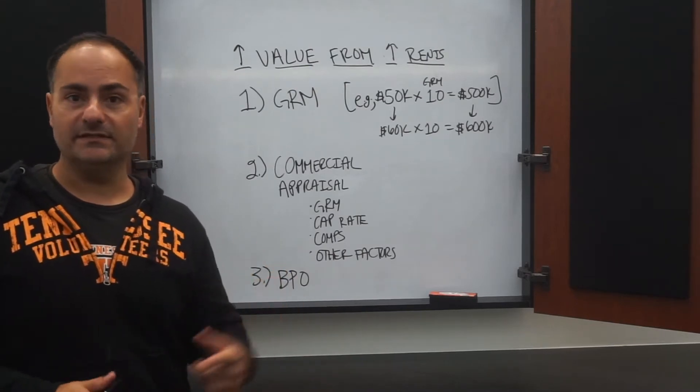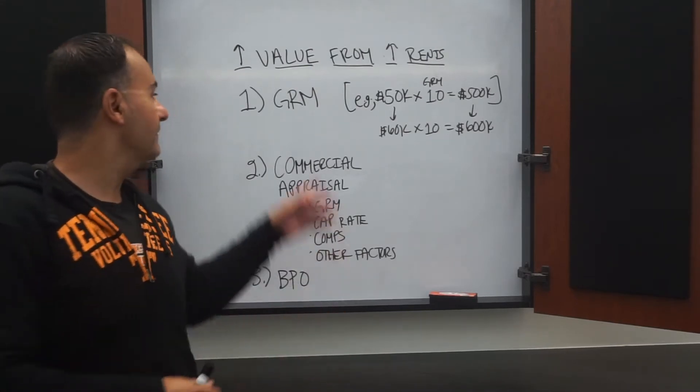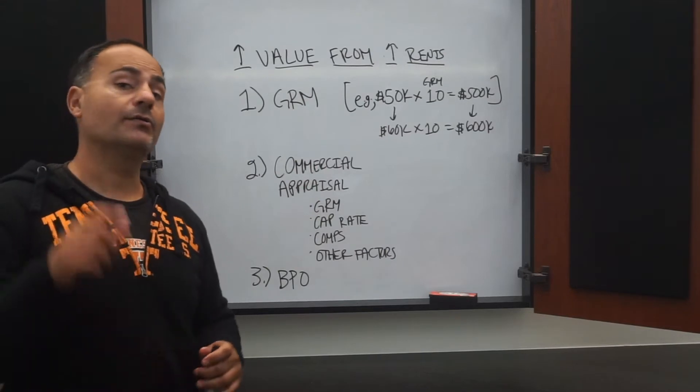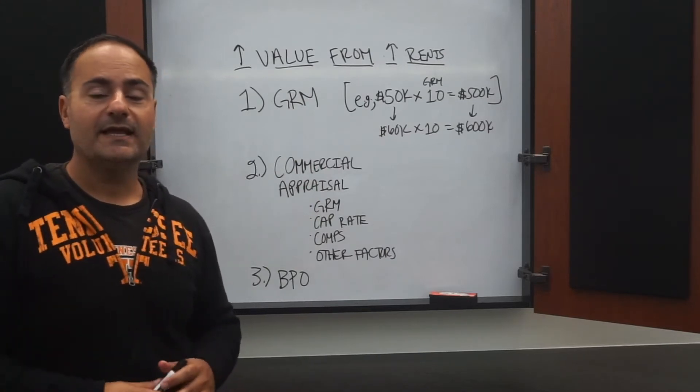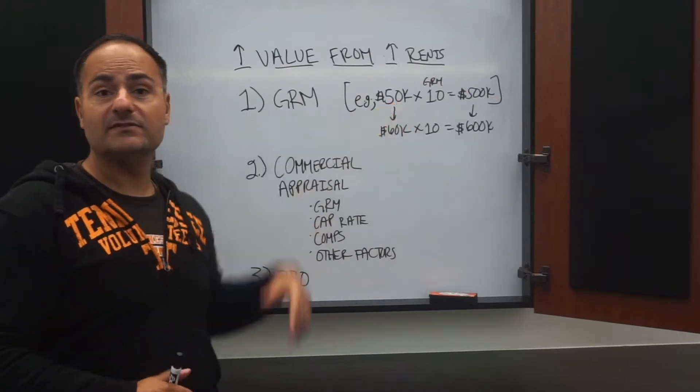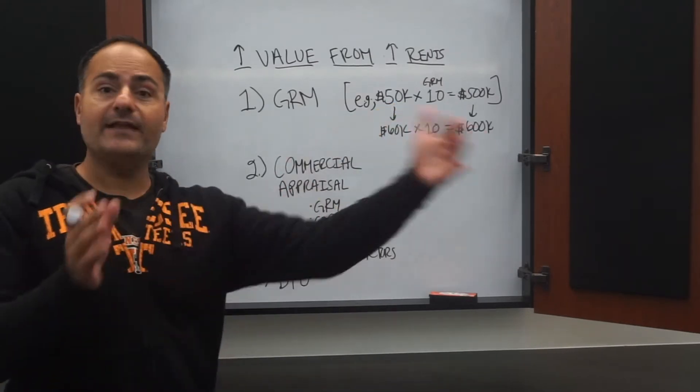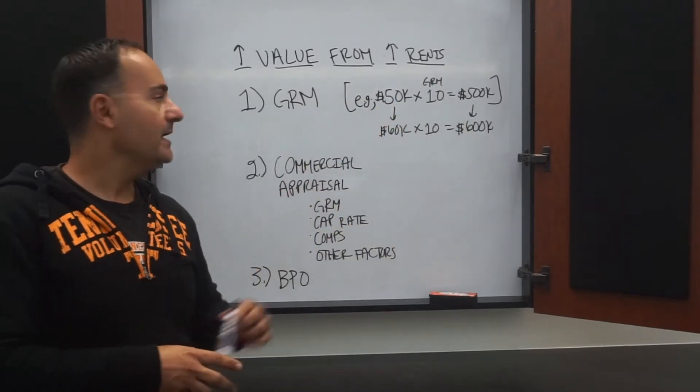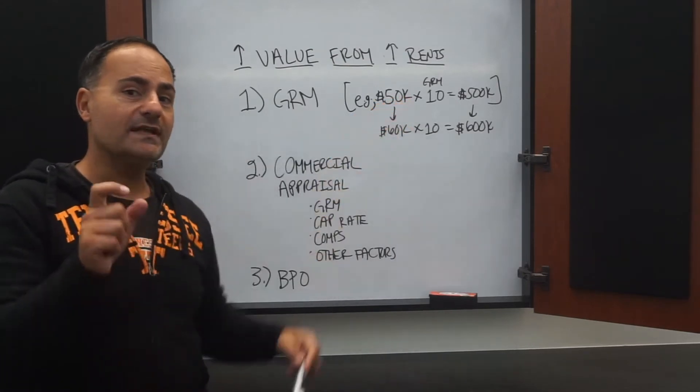So the first is the GRM or the gross rent multiplier, and it's exactly what it sounds like. So let's say your gross rent is $50,000 on an annual basis for that apartment building, and let's say the GRM, which is a multiplier, it's just a number in the market and it's 10 in that market.